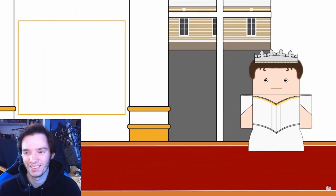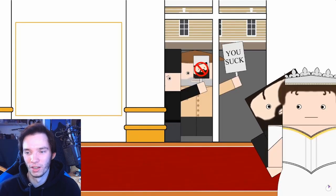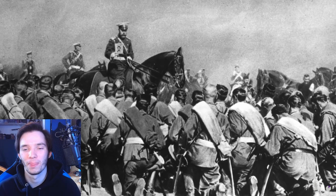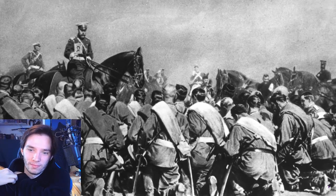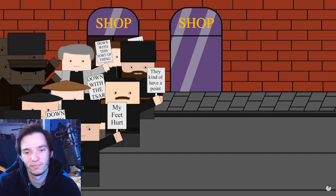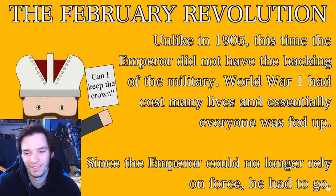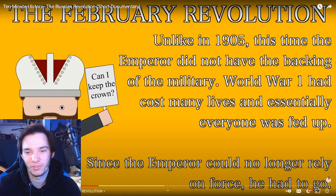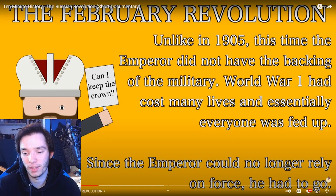He left his wife, Empress Alexandra, in charge of the capital, with her advisor Grigory Rasputin. After Russia's failings on the Eastern Front, Rasputin was blamed for corrupting the royal family and was eventually assassinated in 1916. Nicholas, as the head of the army, was seen as responsible for the failings of the war. War fatigue and food shortages led to protests, which Nicholas had hoped to put down with the army — but the army mutinied and joined the protesters. In order to calm the situation, some Russian generals met with Nicholas and urged him to abdicate. Unlike in 1905, the Emperor did not have the backing of the military; World War I had cost too many lives and everyone was fed up. Since the Emperor could no longer rely on force, he abdicated in 1917. The February Revolution.